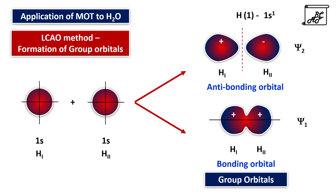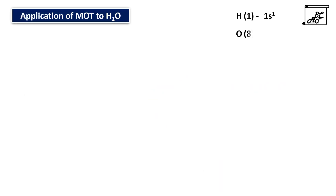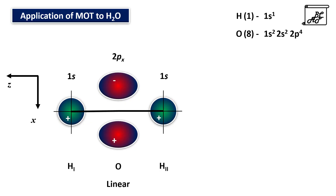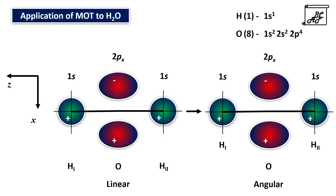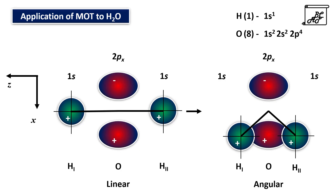Before considering the combination of these group orbitals with the atomic orbitals of the central atom, we need to consider the water molecule in the x-z plane. In a linear arrangement, the ψ₁ group orbital — the two 1s orbitals of the two hydrogen atoms — near the 2px orbital of the central oxygen atom gives a non-bonding situation, where the 1s orbital cannot combine with the central 2px orbital. When we move to the angular arrangement, to gain extra stability these two 1s orbitals move toward the central 2px orbital, and that is how the ψ₁ group orbital combines with the 2px orbital.